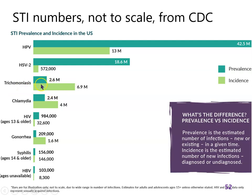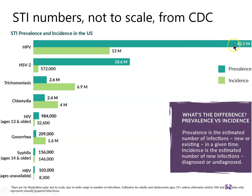The situation is reversed for trichomoniasis, caused by a protist — it doesn't last long, so new cases greatly outnumber existing ones. The same pattern applies to chlamydia and gonorrhea. These numbers are not to scale with each other because no single scale could allow you to see detail for both HPV — in the tens of millions — and bacterial causes in the lower millions.